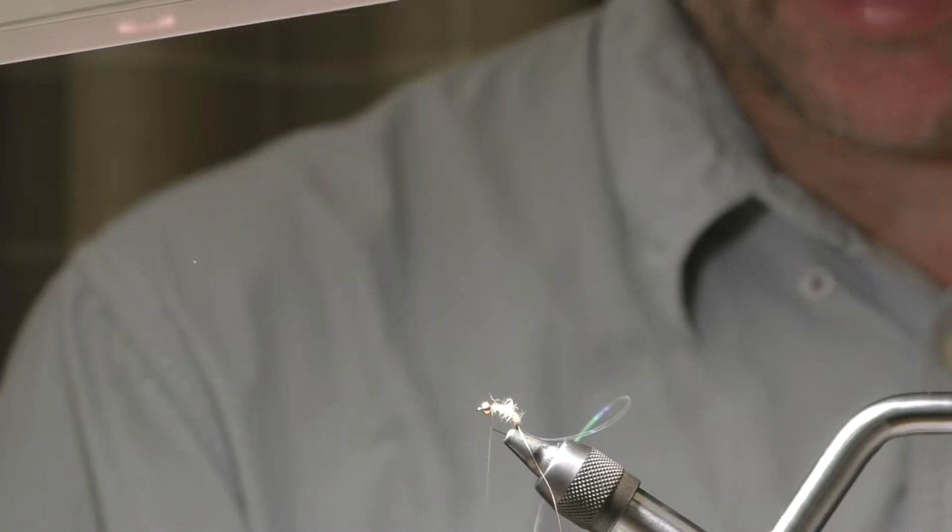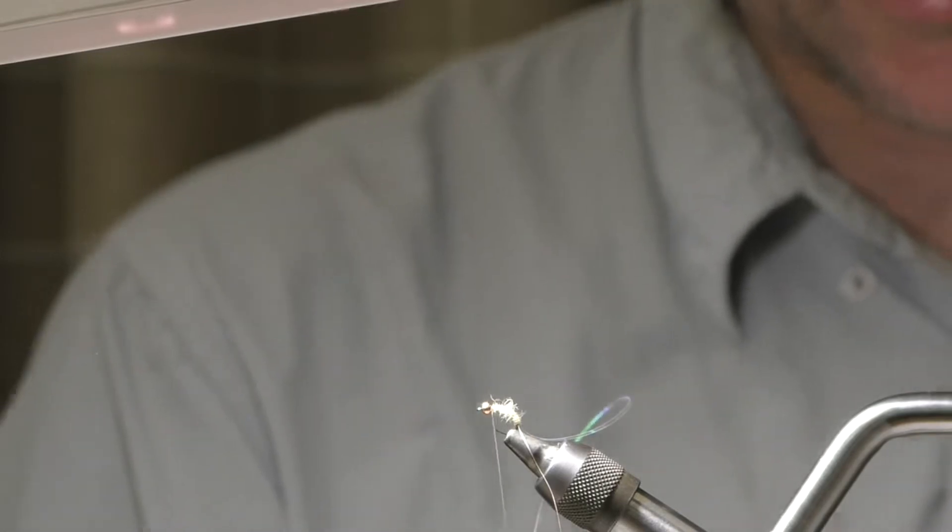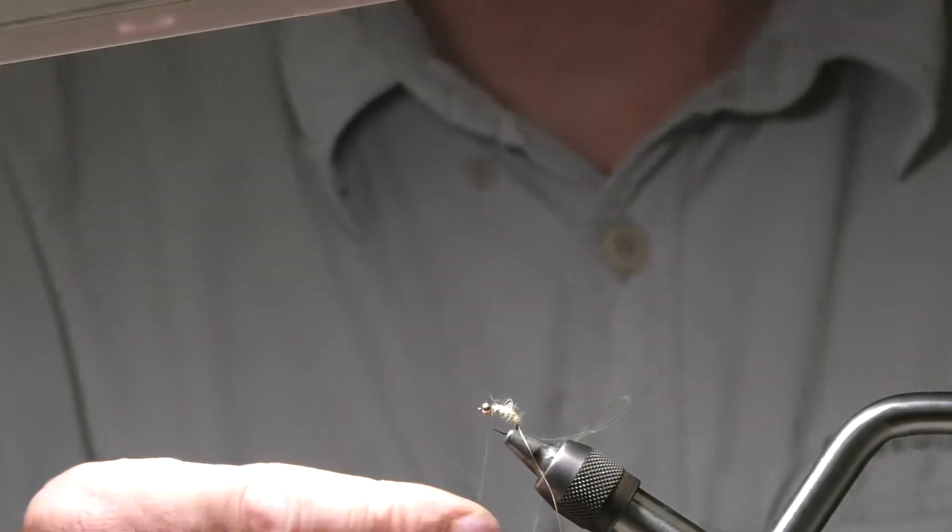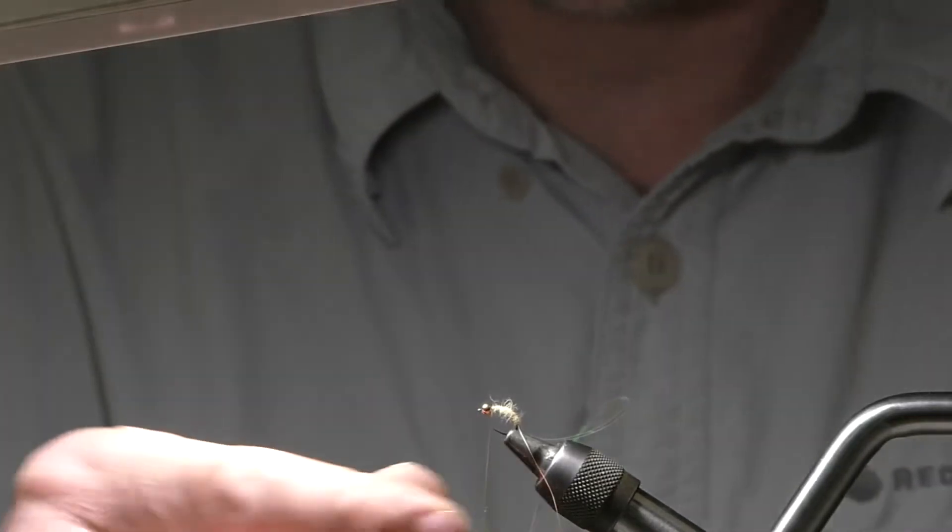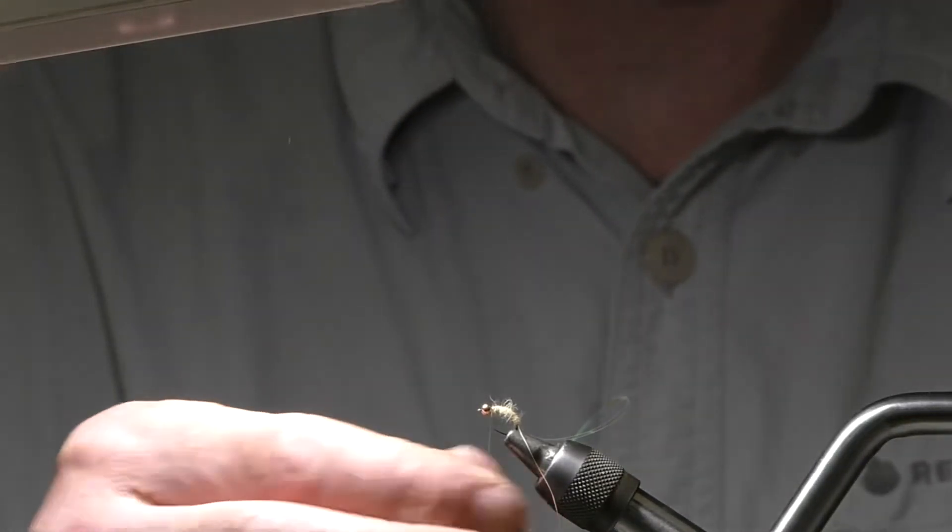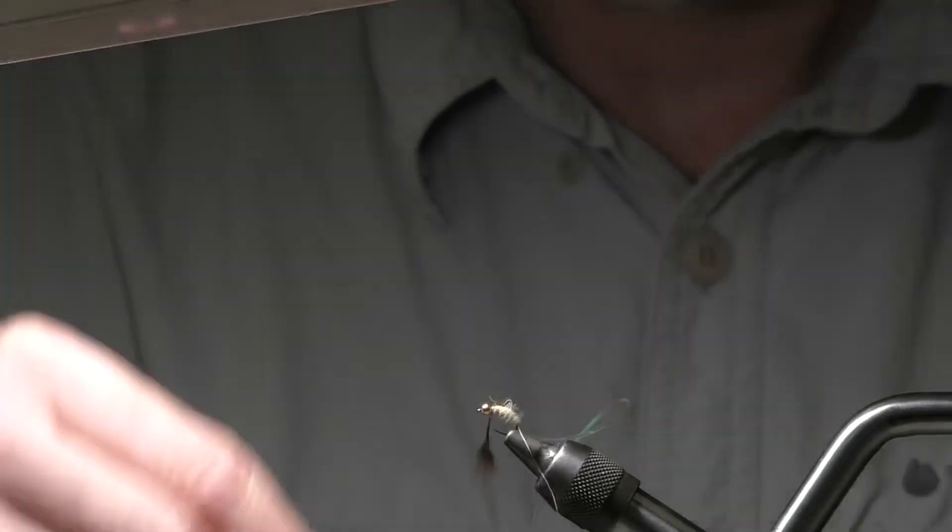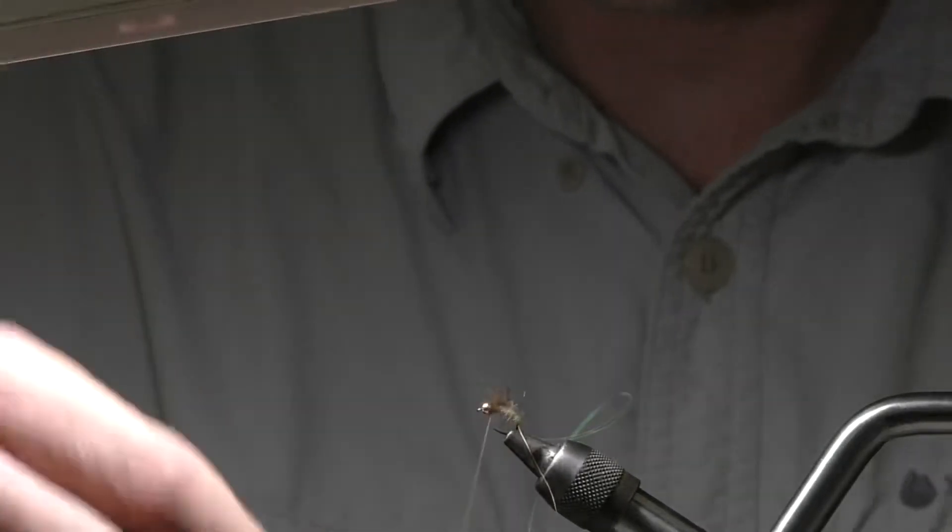So you've got to try and keep your abdomen dubbing nice and sort of tight, and the thorax dubbing you want it a little bit looser if you can, so it breathes a bit more as it's leggy. So it's one complete turn of that behind the bead.